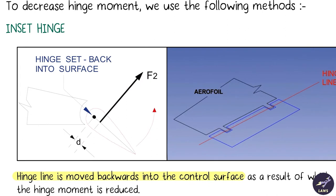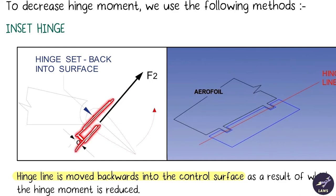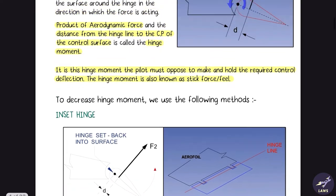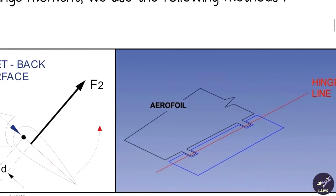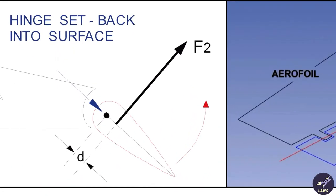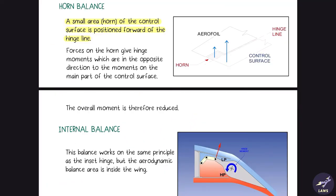With an inset hinge, the hinge line is moved further inside the control surface, reducing the distance and reducing the overall hinge moment. Earlier the hinge line was at the leading edge of the control surface; now it has moved further inside. Next is horn balance — a small area or horn is positioned forward of the hinge line.